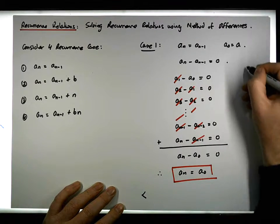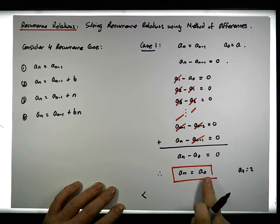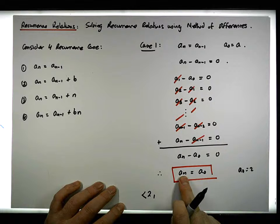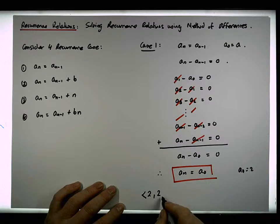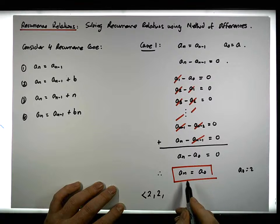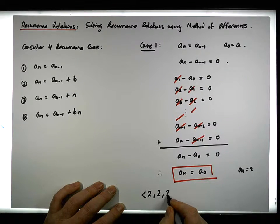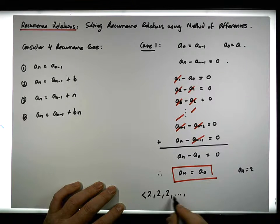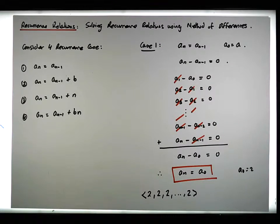If a_0 was equal to 2, then the nth term is simply equal to a_0, which is equal to 2. The next term a_1 is equal to a_0, which is 2. And a_2 is also equal to a_0, which is 2. So what we end up with is this particular constant sequence. If we iterate it out to the nth term, it's just effectively the constant sequence of 2s.